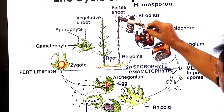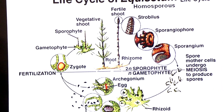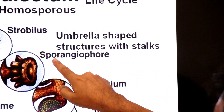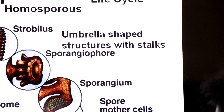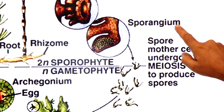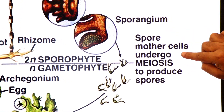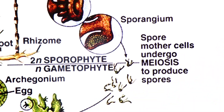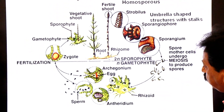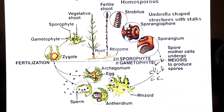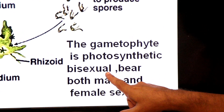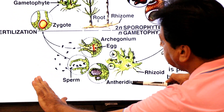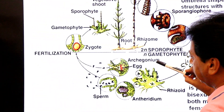The sporophyte bears a strobilus at its apex. The strobilus contains umbrella-shaped structures with stalks called sporangiophores, and inside them are sporangia. The sporangia contain spore mother cells that undergo meiosis to produce haploid spores — this is sporic meiosis. Spores are released and germinate to produce a bisexual, photosynthetic gametophyte bearing both male and female sex organs. The male sex organ produces flagellated sperm.